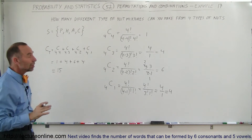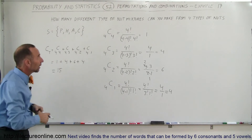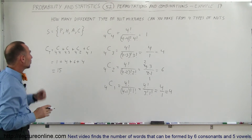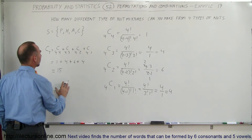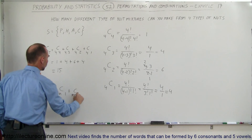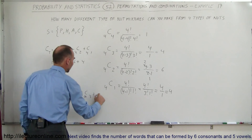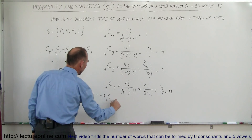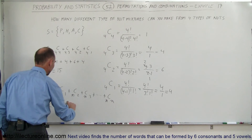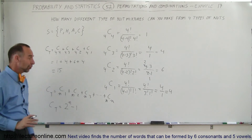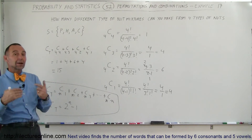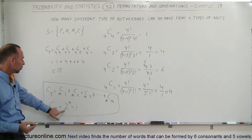We can generalize this for any number of items. In general, the total number of combinations is C(N,1) plus C(N,2) plus C(N,3) plus ... plus C(N,N). Mathematically, this equals two to the N power minus one. So if you have N different kinds of nuts, the number of different mixtures you can make is simply 2^N minus one.